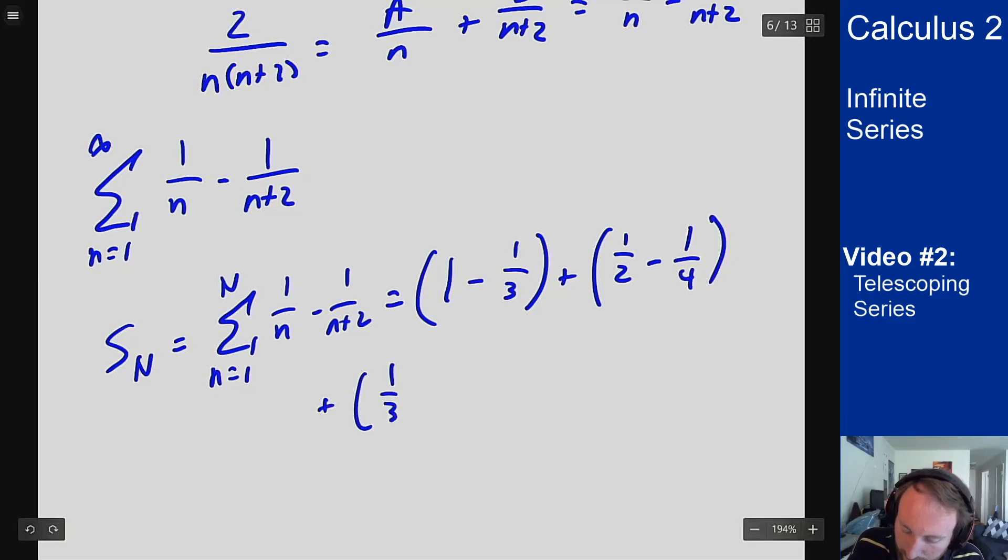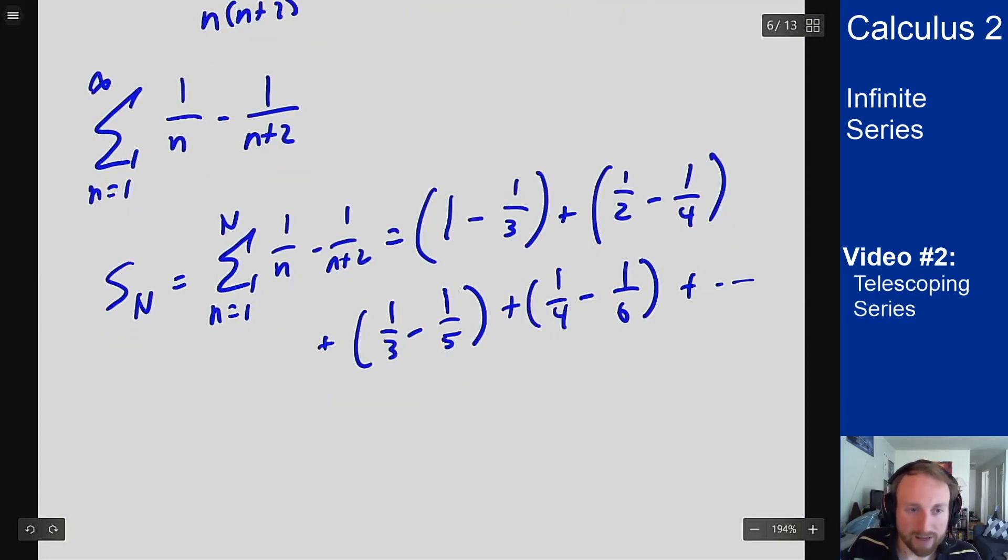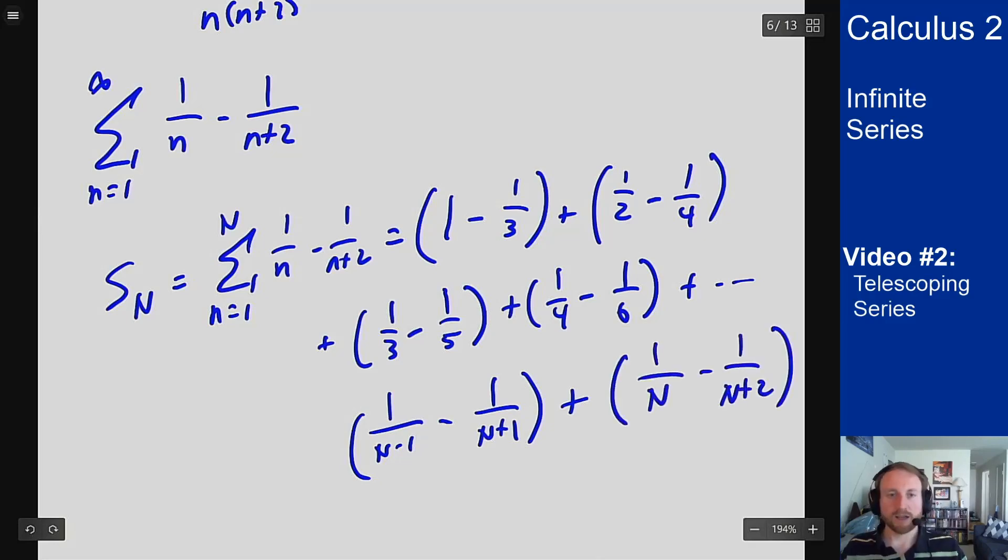For three, I get one-third minus one-fifth. For four, I get one-fourth minus one-sixth. This keeps going. At the very end, if I plug in N minus one, I will get one over N minus one, minus one over N plus one, plus one over N minus one over N plus two. And that will be what I get for my entire series with some terms missing in the middle.